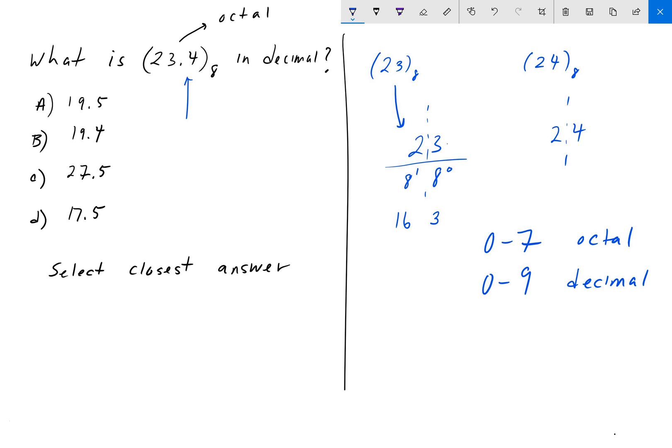Then what we do in order to find decimal is that we just add these two together. When we add those two together we get 19, so that means that 23 in octal is equal to 19 in decimal. Then we can do the same for the 24.